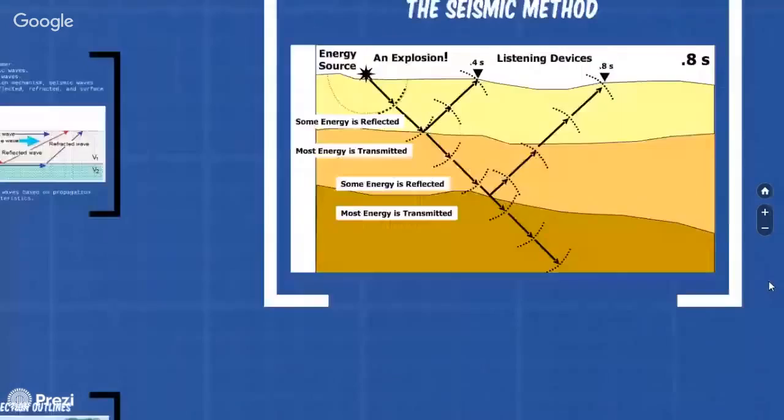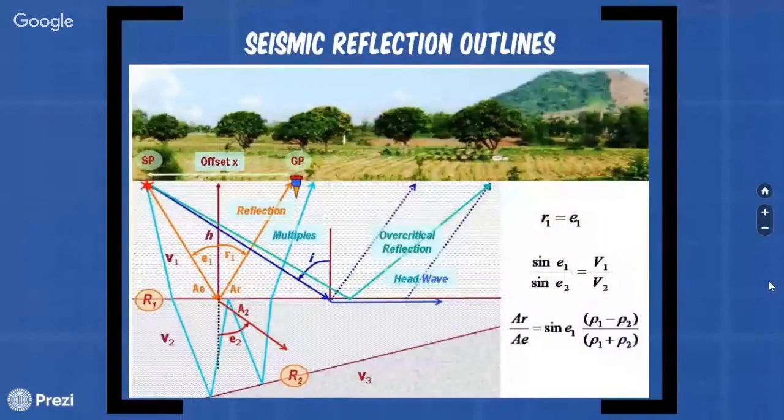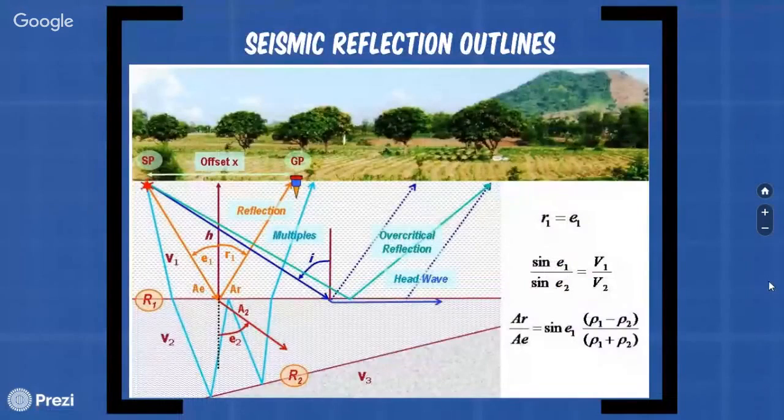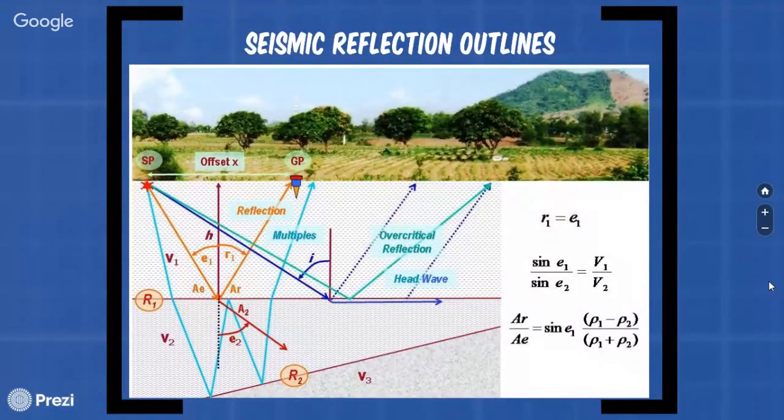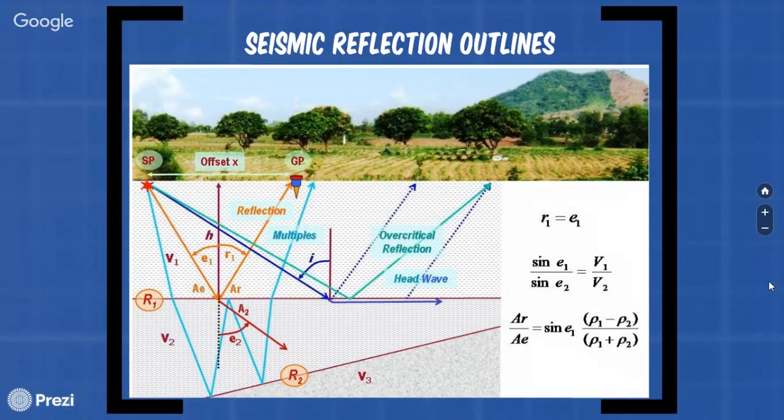Seismic reflection outlines. When a seismic wave encounters a boundary between two materials with different acoustic impedances, some of the energy in the wave will be reflected at the boundary, while some of the energy will be transmitted through the boundary. The amplitude of reflected wave is predicted by multiplying the amplitude of incident wave by seismic reflection coefficient, determined by the impedance contrast between two materials.